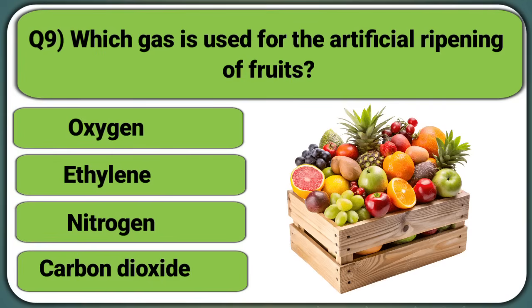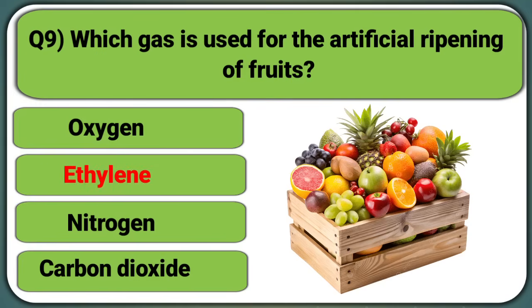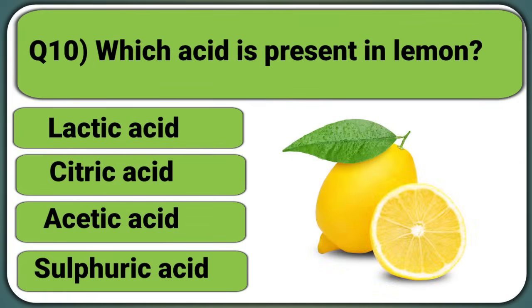Which gas is used for the artificial ripening of fruits? Oxygen, Ethylene, Nitrogen, or Carbon dioxide. Answer: Ethylene.